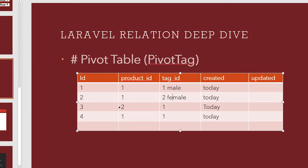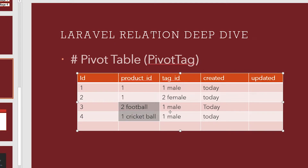We have product id 2 which is football, and it belongs to male. We also have cricket ball as another product. Both cricket and football can be tagged under the male category. So one product can be in one category — that's a one-to-many relationship. Similarly, for product id 1, cricket ball can be played by both male and female, so it belongs to many tag ids.